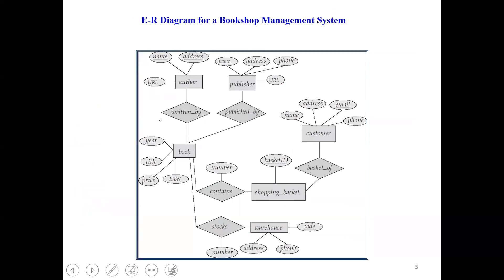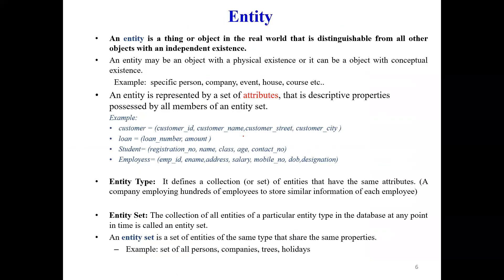Here is an example of an ER diagram for a bookshop management system. We can identify rectangular boxes representing names like author, publisher, book, customer, and warehouse. The ER diagram has notations to represent various data elements: entities, relationships among entities, attributes, and so on. We will study these notations one by one, understanding each term that comes under the ER model.